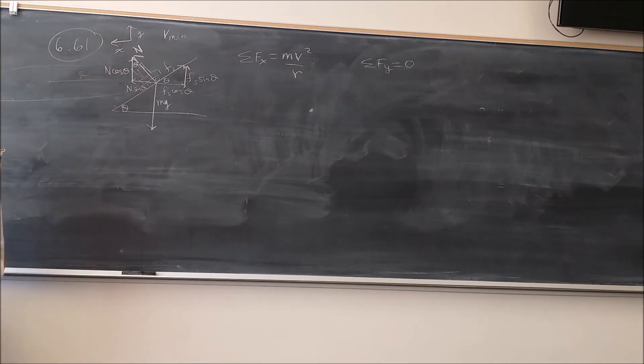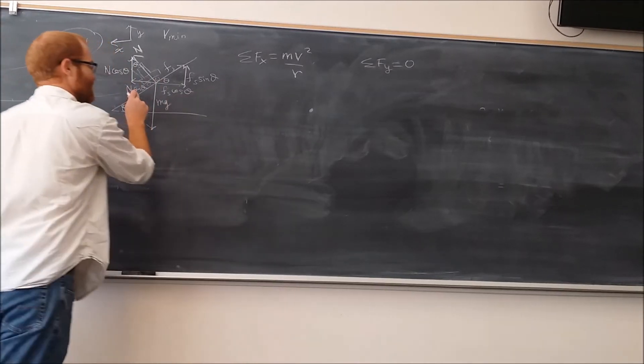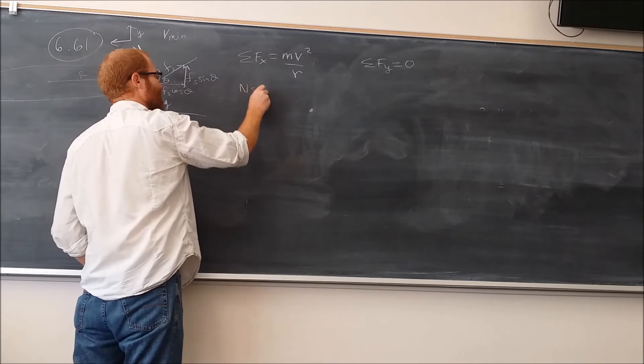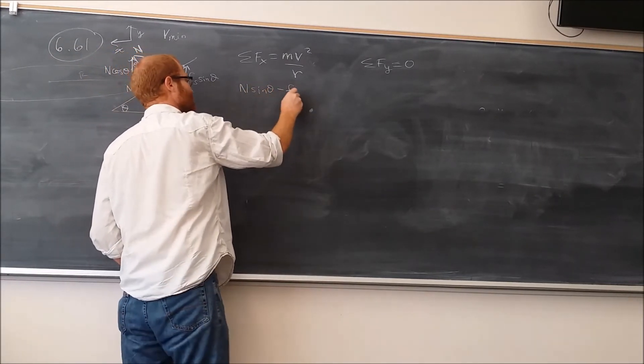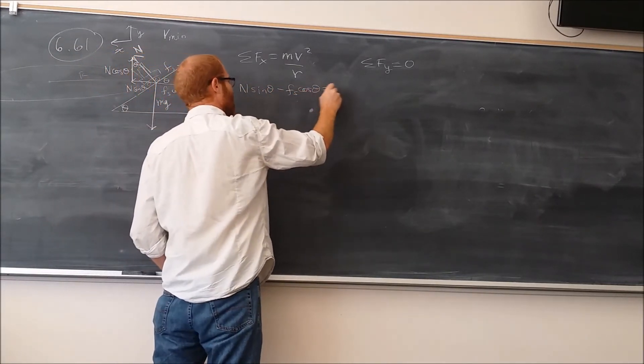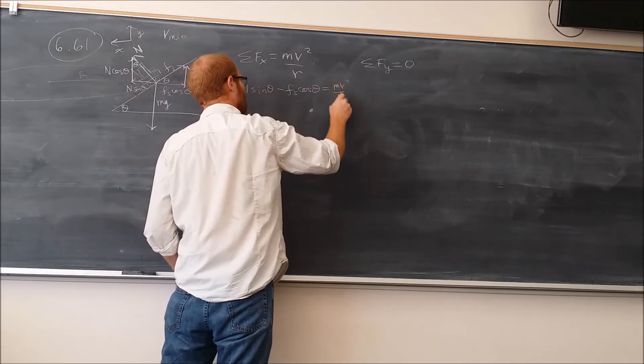That means that this side here is N cosine theta and this side here is N sine theta. So, we get those as our vectors and our forces. Okay. In the x direction, we have two forces. We have this one and this one. So, we get right here, because I said this side was positive, N sine theta minus Fs cosine theta equals mv squared over r.